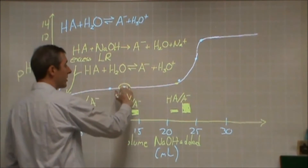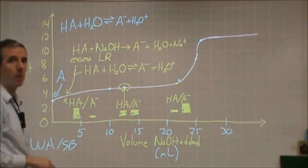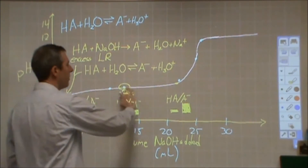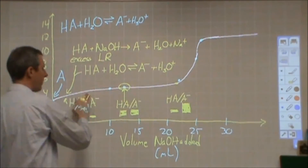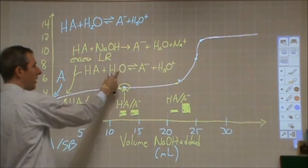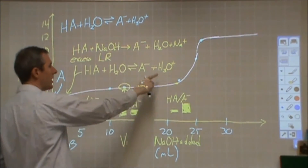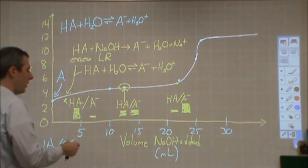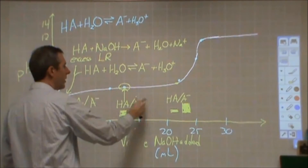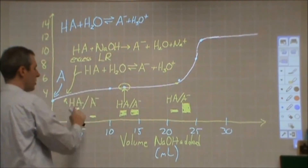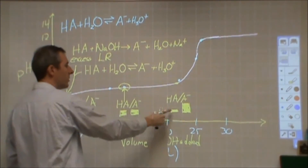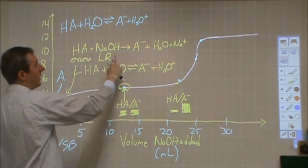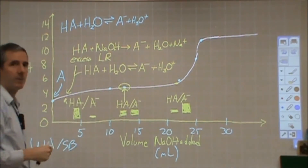You'll find that the slope of this line is the smallest at that half-equivalence point. So as I'm moving from point A to point D, I'm in the buffering region. I basically have HA, A⁻, and water present. Those establish an equilibrium that affects my H₃O⁺, which impacts my OH⁻. Moving through this region involves a stoichiometry calculation to figure out how much of each of those things I have.